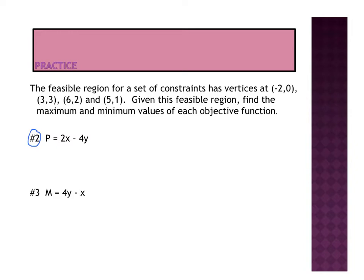For the point (-2, 0), if we plug that in, plug in -2 for x and 0 for y, we end up with -4 minus 0, which gives us -4.